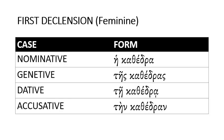To review again: the first declension, or the first pattern used for changing these forms, is the feminine. Nominative case is 'a cathedra'. Genitive case is 'teis cathedras'. Dative case is 'tei cathedra'. Accusative case is 'tein cathedran'.